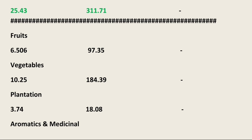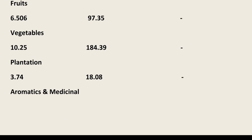There is a little confusion here: on the National Horticulture Board website the vegetable production figure is 184.39 million ton, but the data published on the Ministry of Agriculture and Farmer Welfare website shows 187.5 million ton. Now, talking about plantation crops: the total area under plantation crops is 3.74 million hectare and total production is 18.08 million ton.